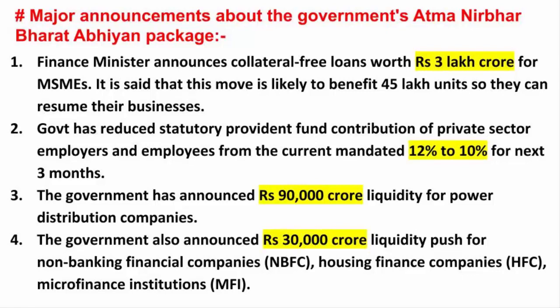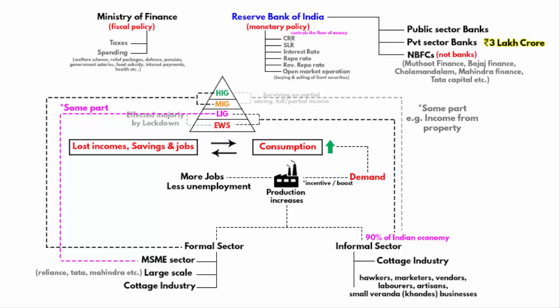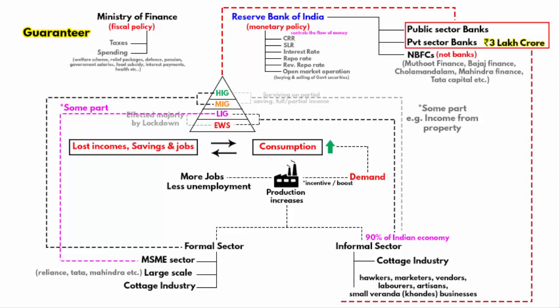The entire package has been divided into five tranches. In the first tranche, the biggest announcement was that the Finance Minister announced collateral-free loans worth Rs. 3 lakh crore for MSMEs, likely to benefit 45 lakh units so they can resume their businesses. The 3 lakh crore money is not the government's own money — this is the bank's money, in other words the depositors' money. The central government is acting as a guarantor, telling banks to provide loans without any collateral.